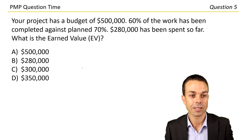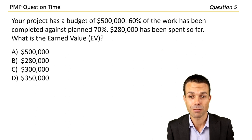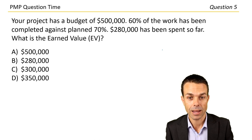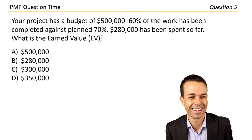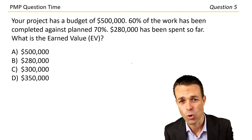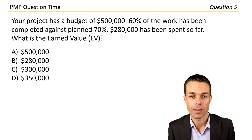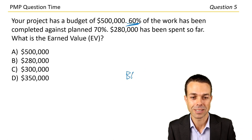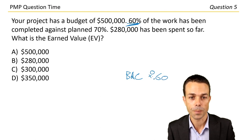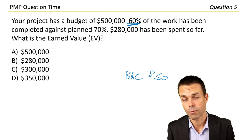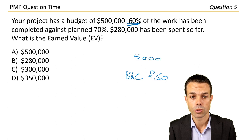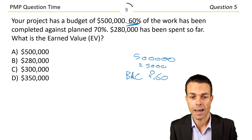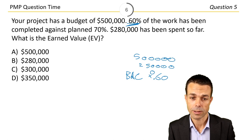Question five. Your project has a budget of $500,000. 60% of the work has been completed against 70% that was planned. $280,000 has been spent so far. What is the earned value? Earned value is the percentage of complete work multiplied by the budget at completion — so $500,000 times 0.60. 50% of $500,000 is $250,000, plus another 10% which is $50,000, gives us $300,000.